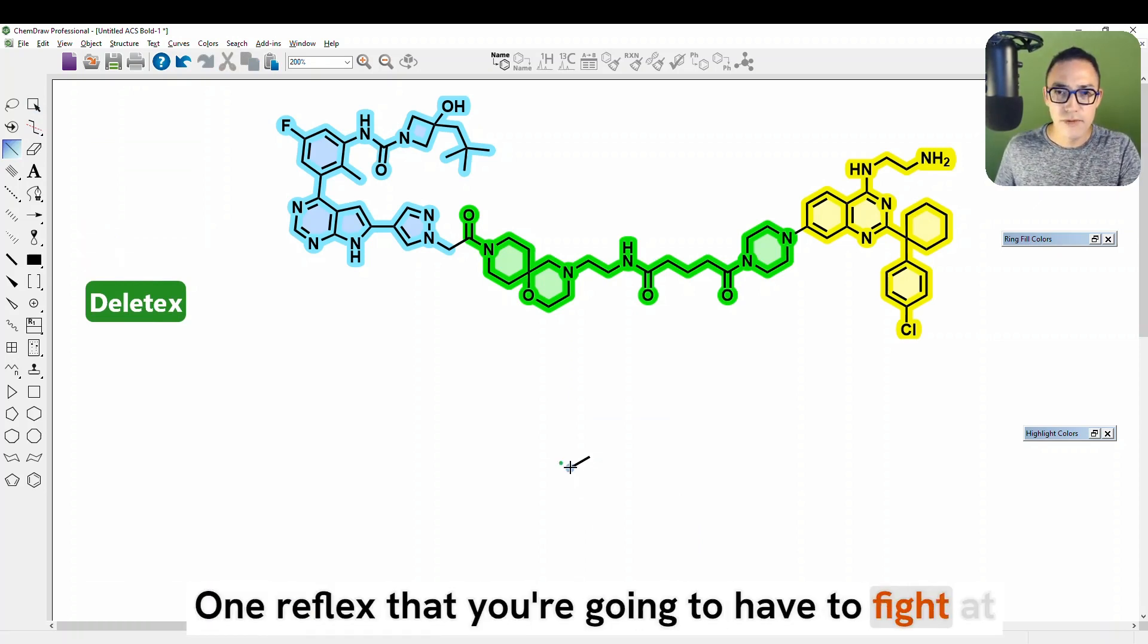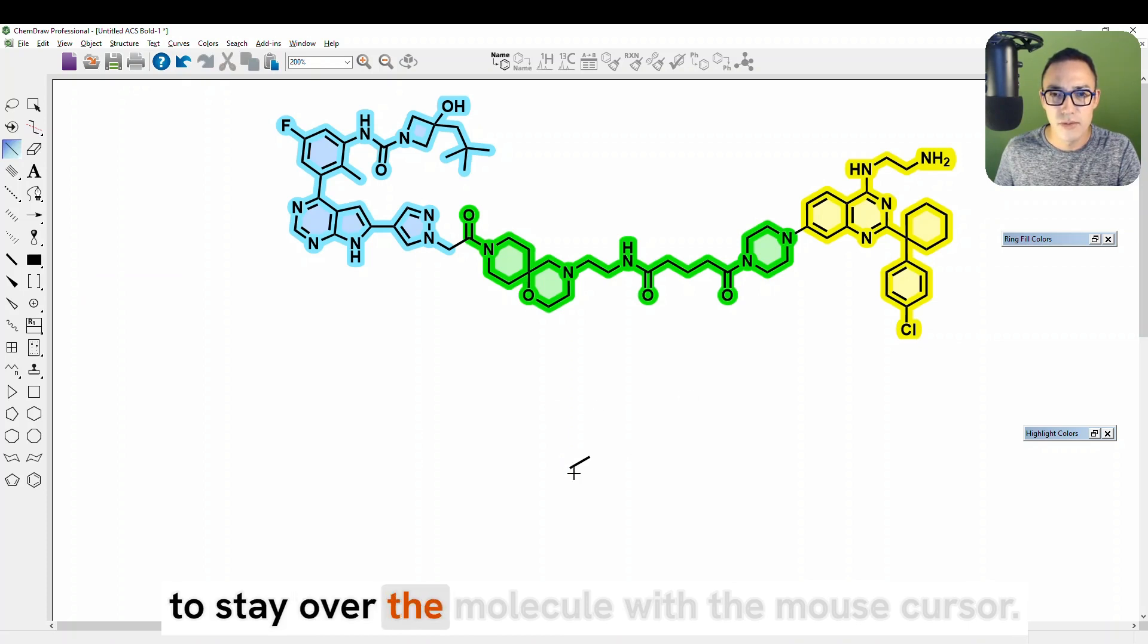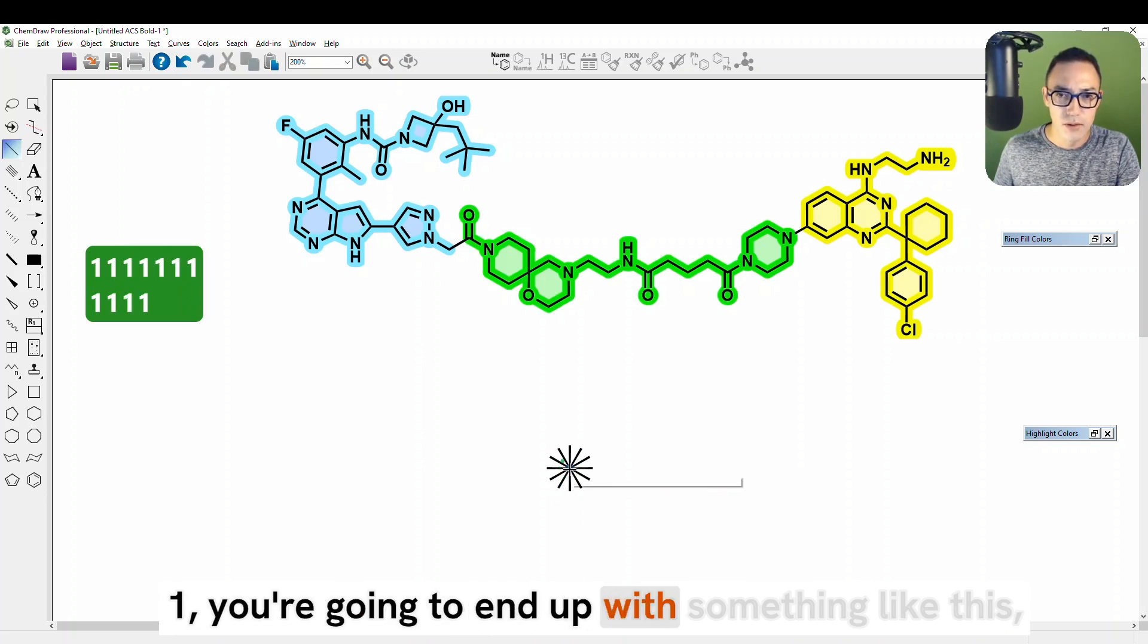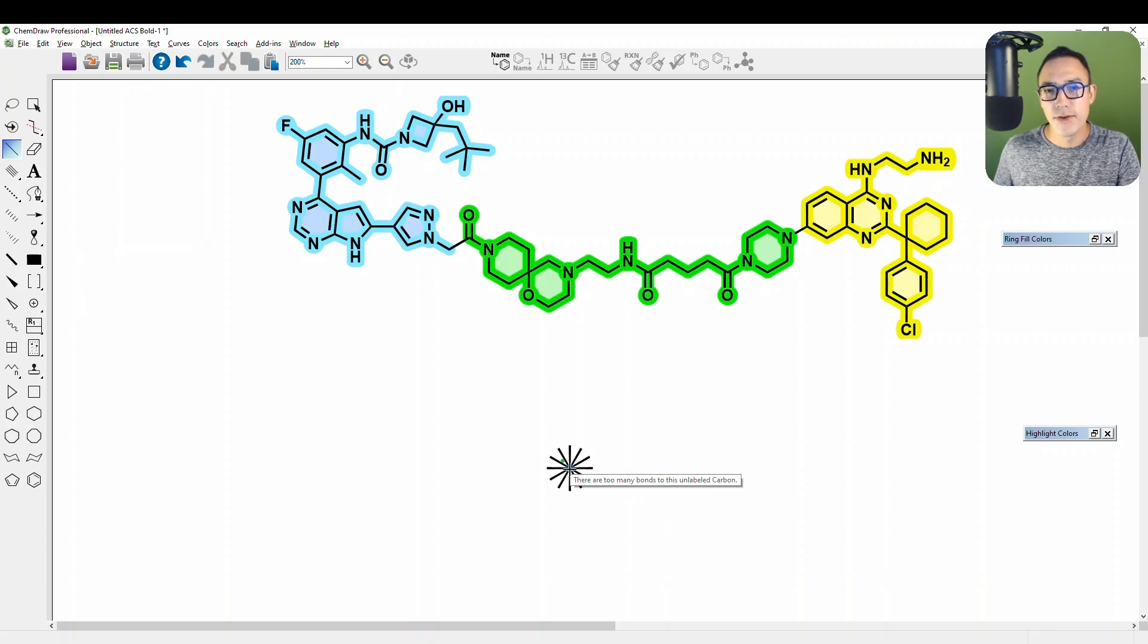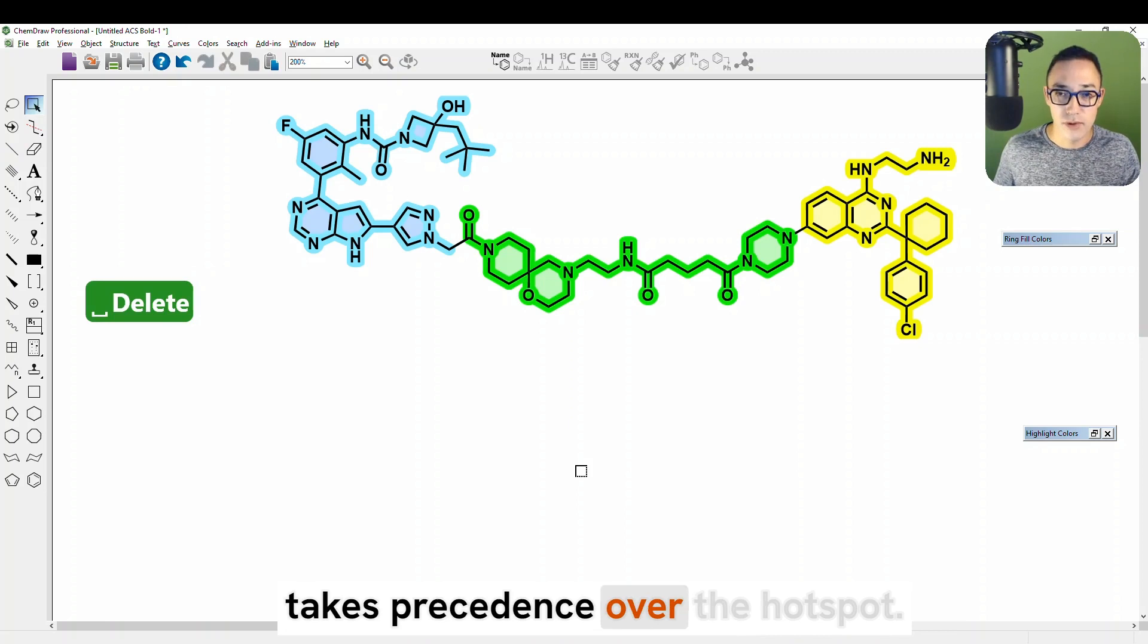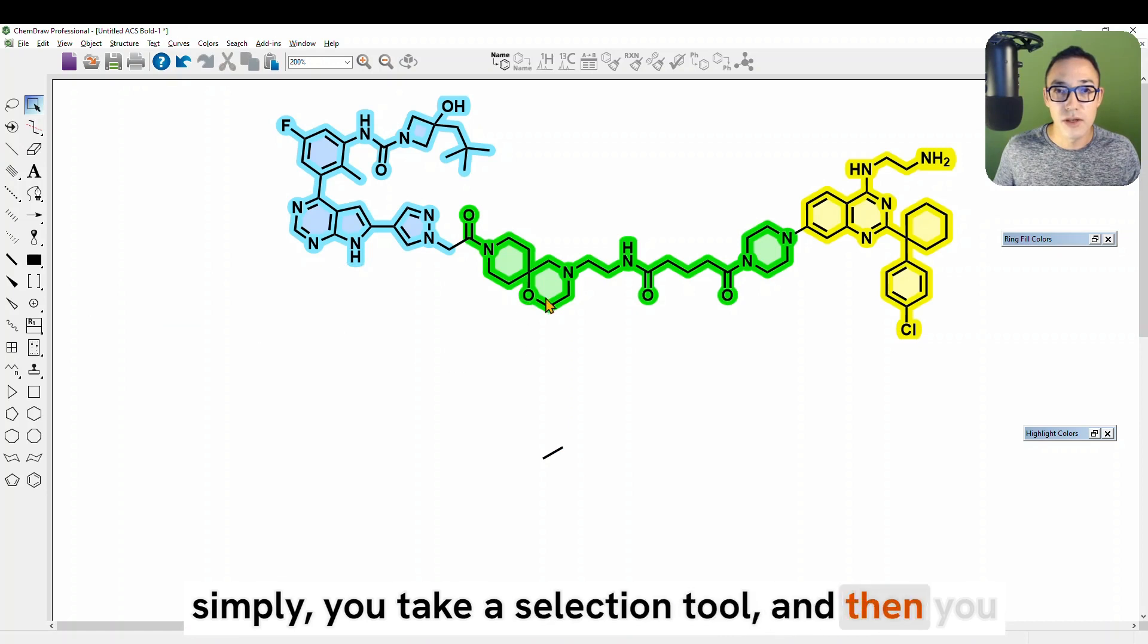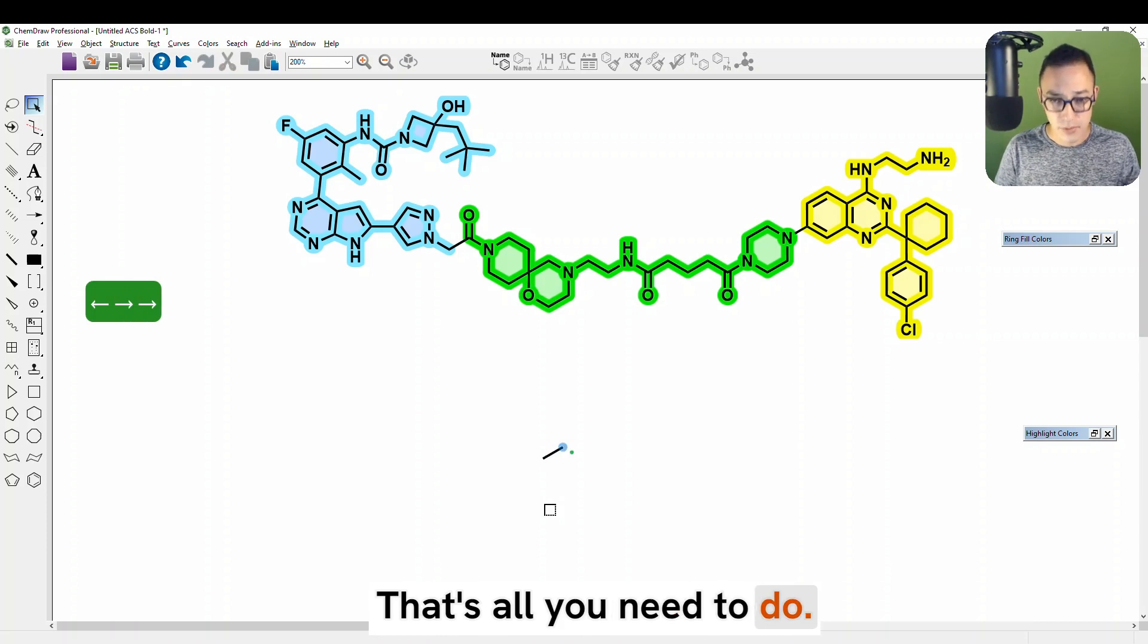That's the basics for one and zero and extending carbon chains. One reflex that you're going to have to fight at the beginning, if you're not familiar with that, is to stay over the molecule with the mouse cursor. Because if you do, and then you keep on pressing one, you're going to end up with something like this, which looks nice but not very chemically accurate. And the bottom line is that the mouse cursor takes precedence over the hotspot. So you want to insert a bond, maybe touch it simply, you take a selection tool, and then you touch the molecule. And that's it, you move away, that's all you need to do.